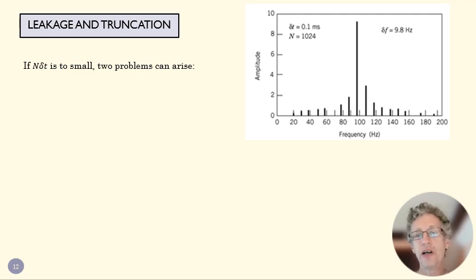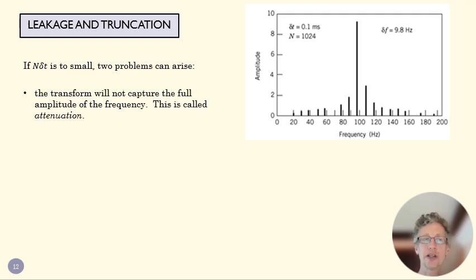Okay, so if we don't take enough data, in other words, our frequency resolution is too big, we don't have enough data points. We can run into a couple of problems. One is called attenuation. And that just means this plot over here is a frequency domain representation of a 100 Hertz signal with an amplitude of 10 volts. And so ideally our transformed frequency domain plot should show one line at 100 Hertz that goes all the way up to 10.